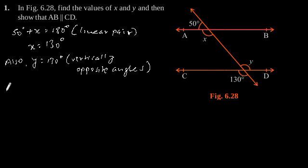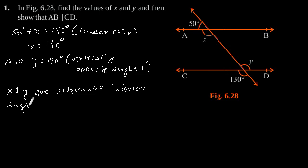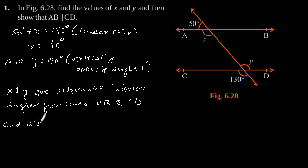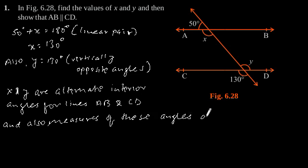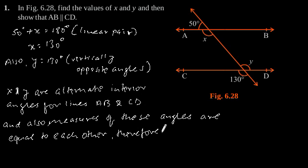Now, as x and y are alternate interior angles for lines AB and CD, and the measures of these angles are equal to each other, therefore line AB is parallel to line CD.